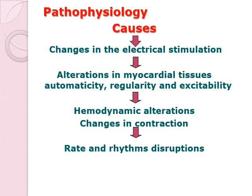Due to the change in electrical stimulation, alteration in myocardial tissue automaticity, regularity, and excitability occurs, causing hemodynamic alteration. Whenever there is a problem with automaticity, regularity, and excitability, the firing of electrical impulses throughout the heart is impaired. With firing impaired, the hemodynamics of the patient — including blood pressure, pulse rate, and pressure within the chest cavity — are altered. This leads to less effective contractions, decreased perfusion to vital organs, and ultimately complications.